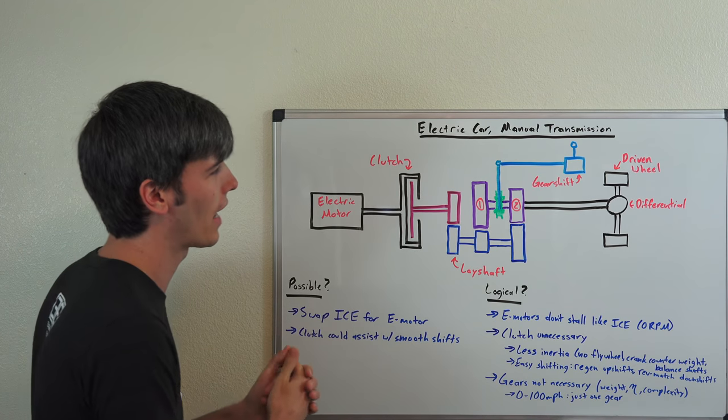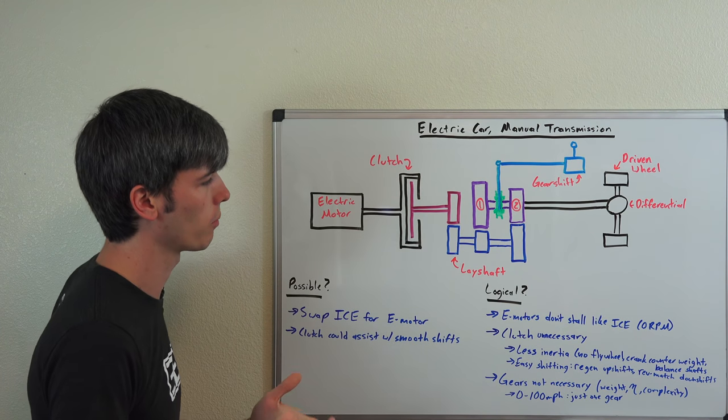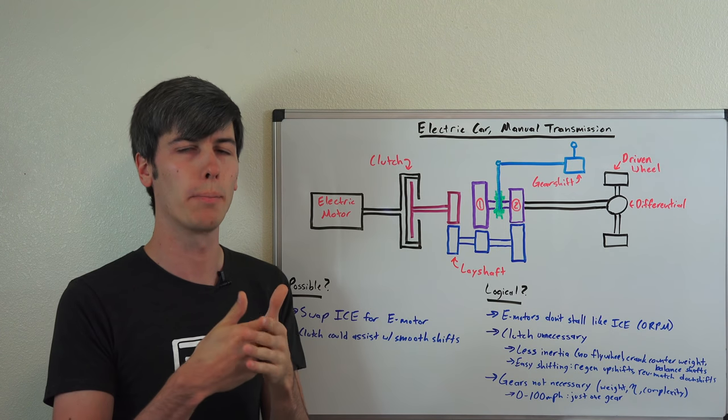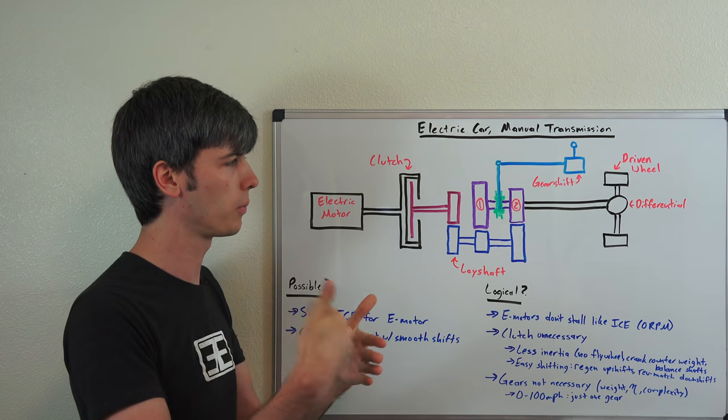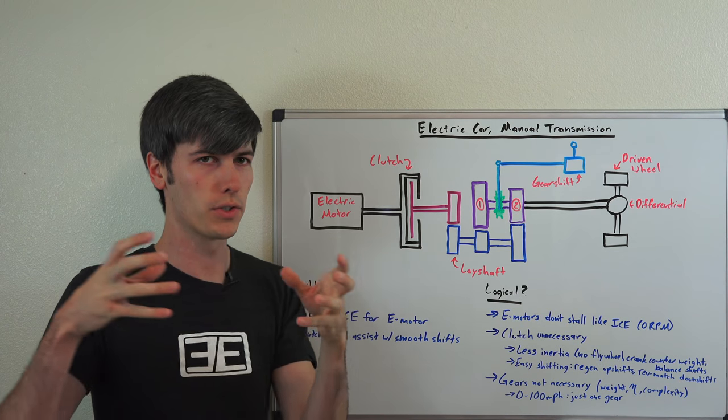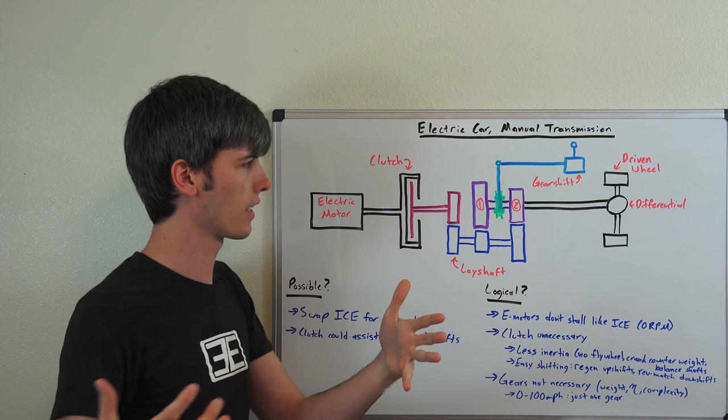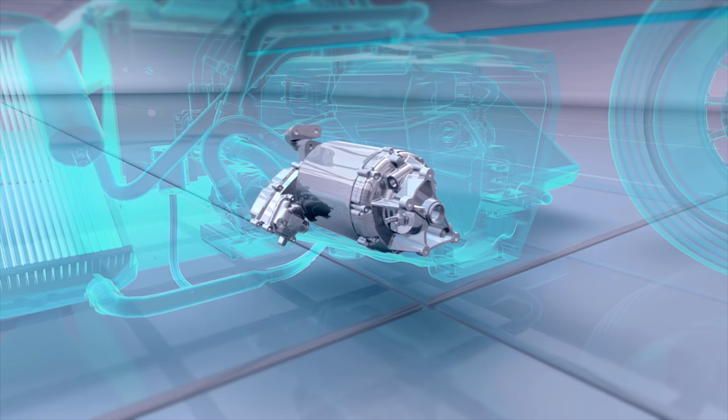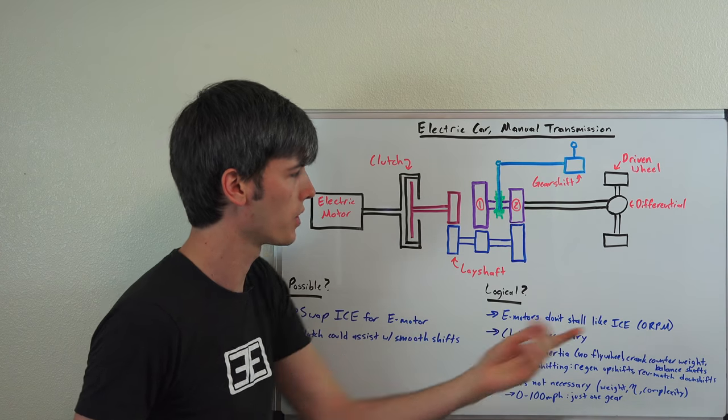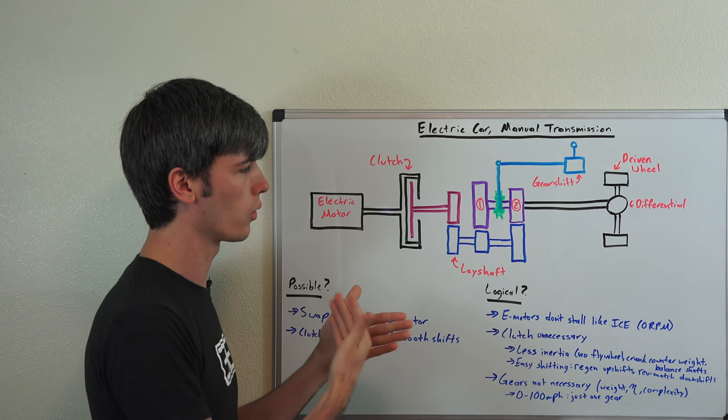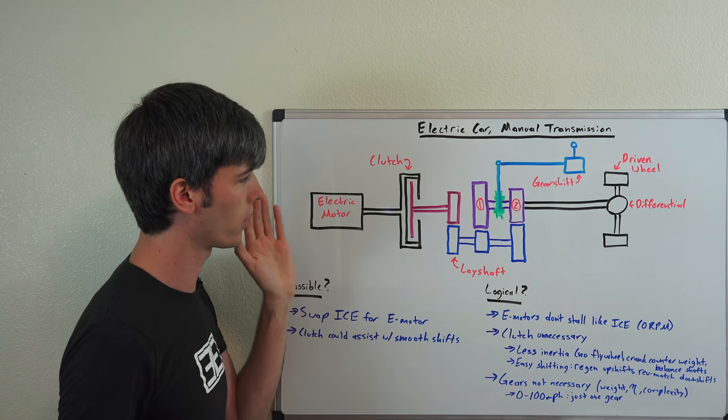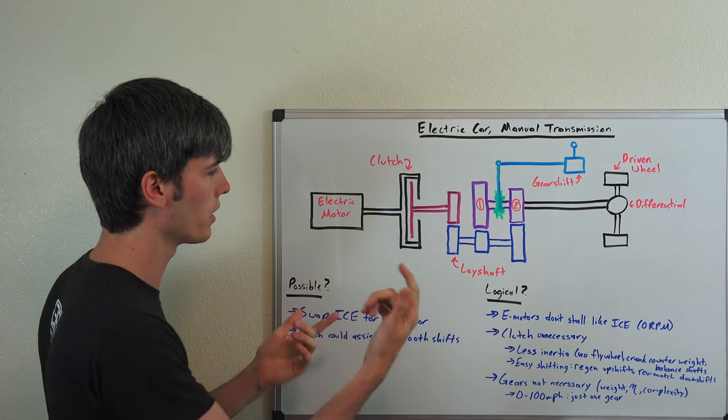First of all, electric motors don't stall like internal combustion engines. When the vehicle is stopped, in an internal combustion engine you need that clutch because you have a speed differential between your engine which is idling at say 800-900 RPM versus the transmission which isn't rotating because it's connected to your wheels. Now with an electric motor, because you don't stall, you can start from 0 RPM. You don't actually need to use that clutch to start from a standstill. You can actually just press on the throttle pedal, the accelerator pedal, and away you go. So you wouldn't need it for the start, and ultimately the clutch portion of this isn't really necessary.